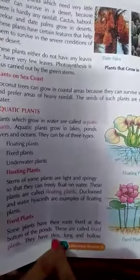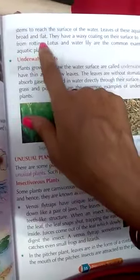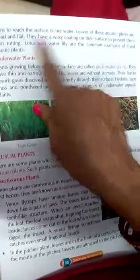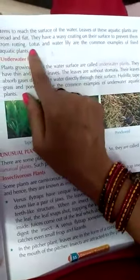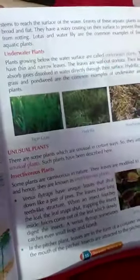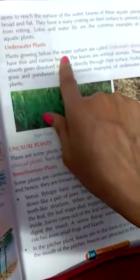Fixed plants have their roots fixed in the soil. They have thin, long, and hollow stems to reach the surface of the water. The leaves of these aquatic plants are broad and flat, and they have a waxy coating on the surface. Lotus and water lily are common examples of fixed aquatic plants.